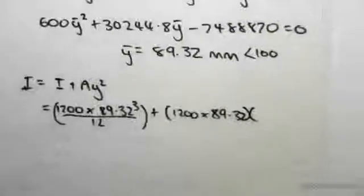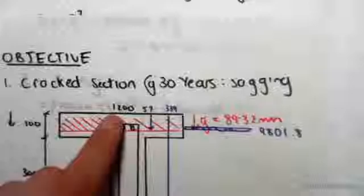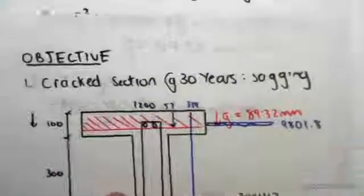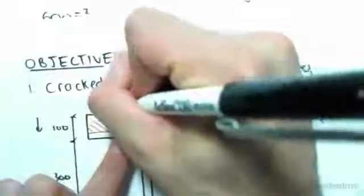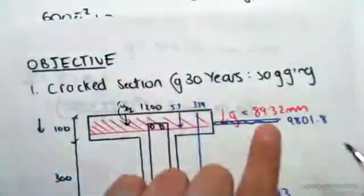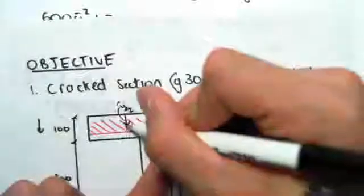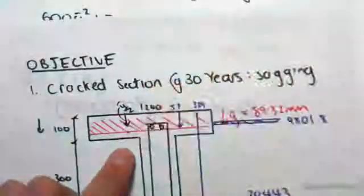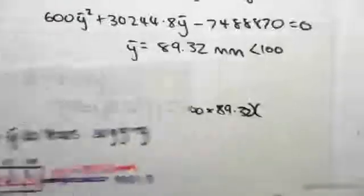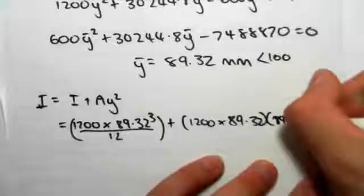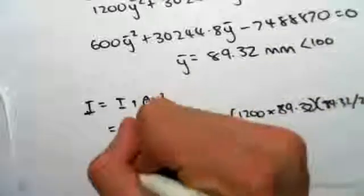Times by the distance to its centroid from the centroid. The centroid of this red block would be y bar on 2. Now the distance from the neutral axis to the centroid, because it's symmetrical, is also going to be y bar on 2, so the distance is just 89.32 on 2, so 89.32 on 2, and that's squared.